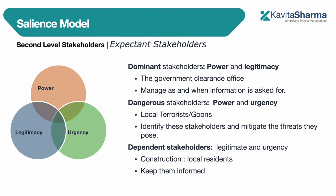The next level of stakeholders are called expectant stakeholders — they have two attributes. The first type is dominant stakeholders, which are a combination of power and legitimacy. For example, a government office requiring a roadways company to abide by certain rules — the claims are legitimate and they have power, so you manage them, work with them, and do whatever they ask.